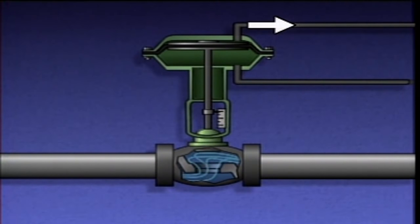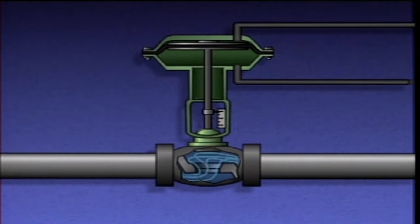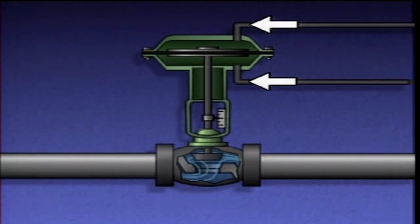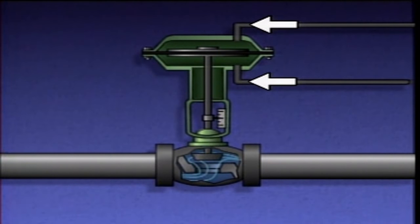Air in the upper chamber is exhausted through the upper air supply port. These actions make stem movement, and therefore valve position, proportional to the difference between the two air pressures applied to the chambers of the actuator.